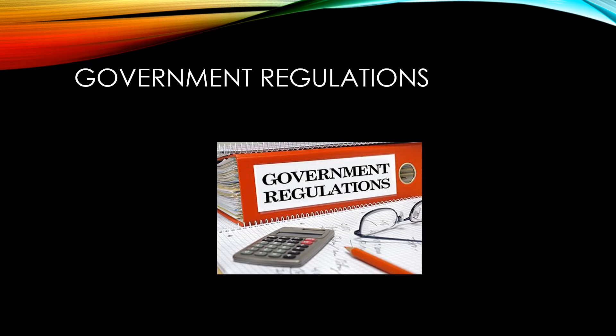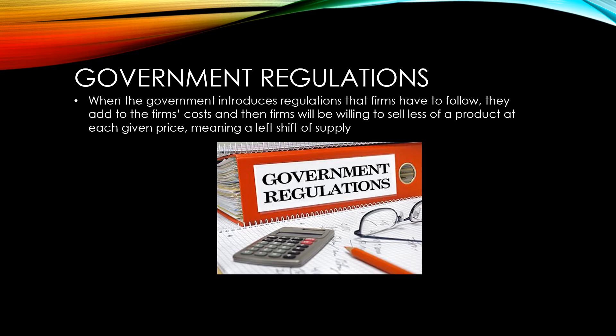When the government introduces regulations that firms have to follow, they add to the firm's costs when they try to make sure that they have been followed. Firms will then be less willing to sell a product at each given price, meaning a left shift of supply. If regulations can be reduced, costs will be lowered, and we will see a right shift of supply.